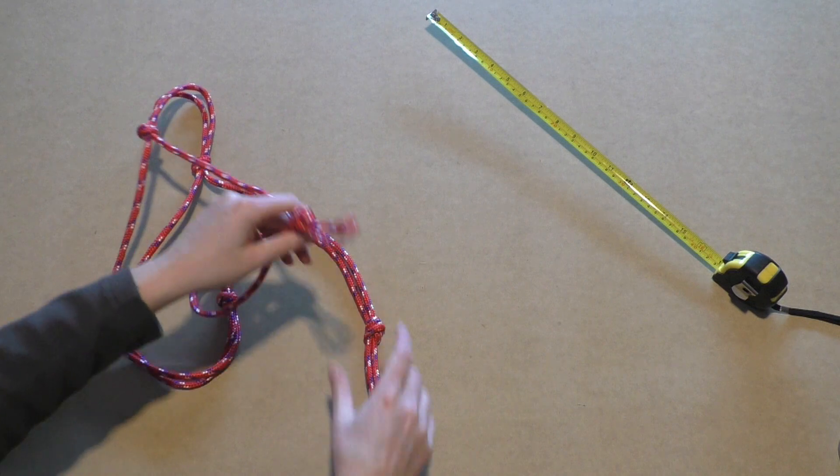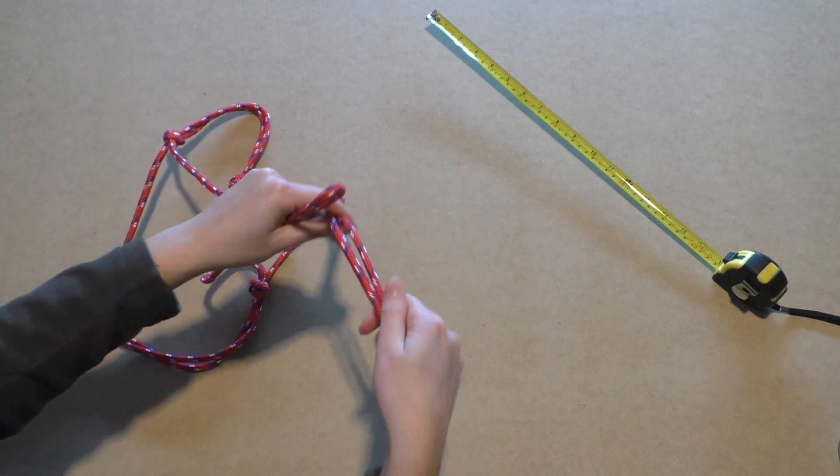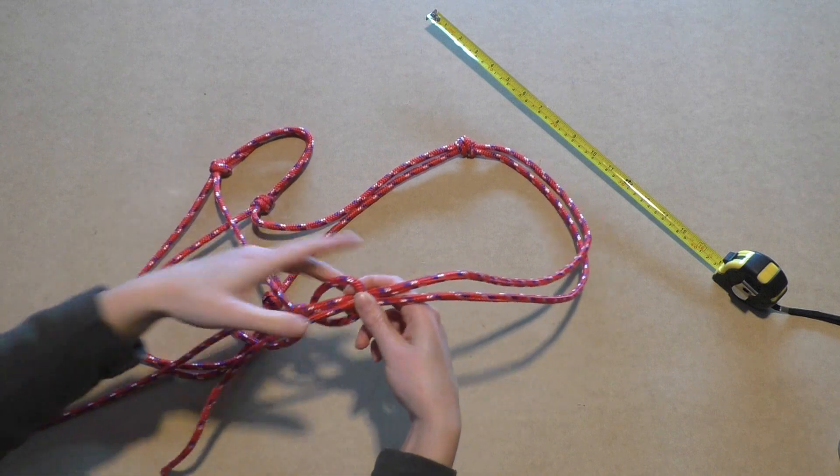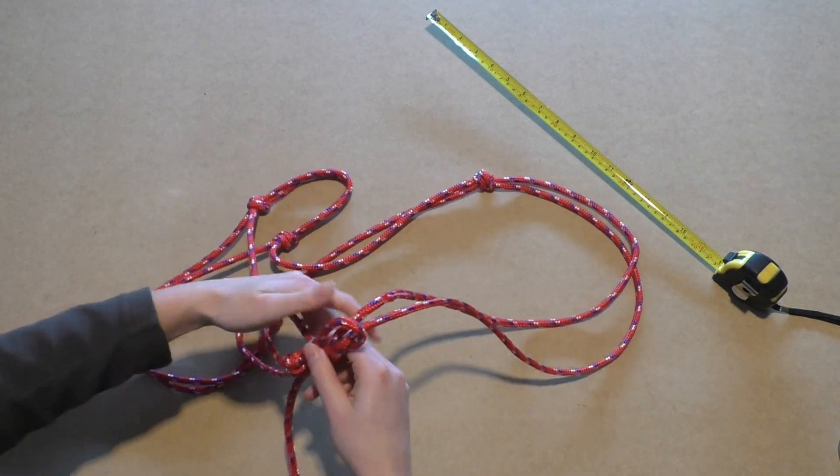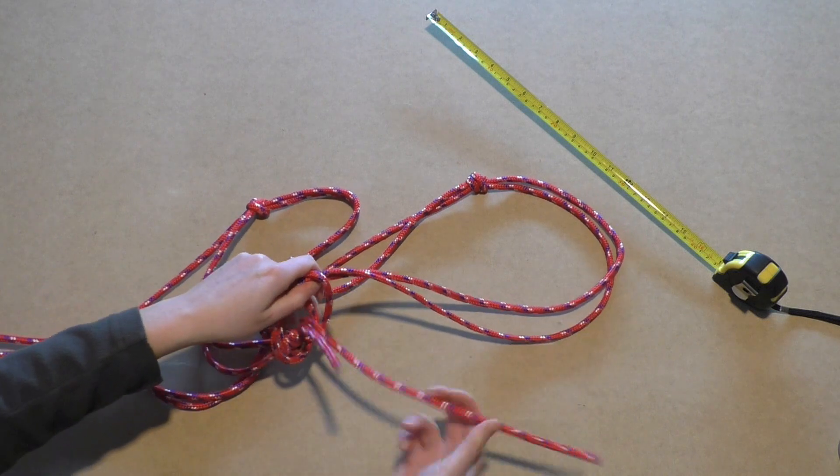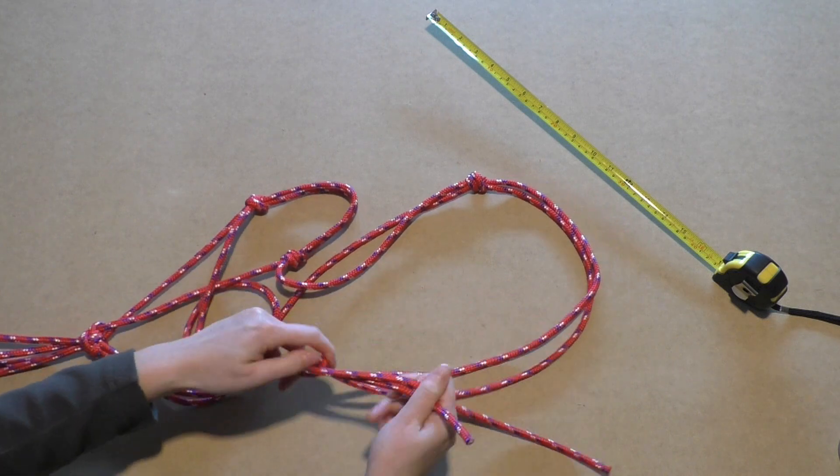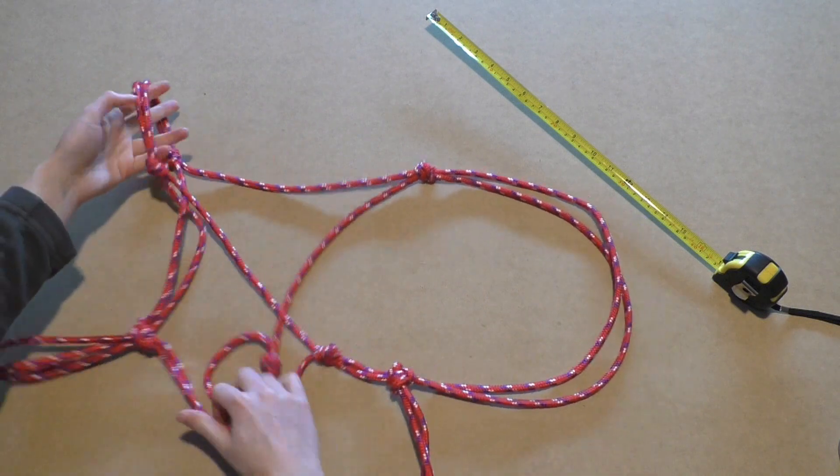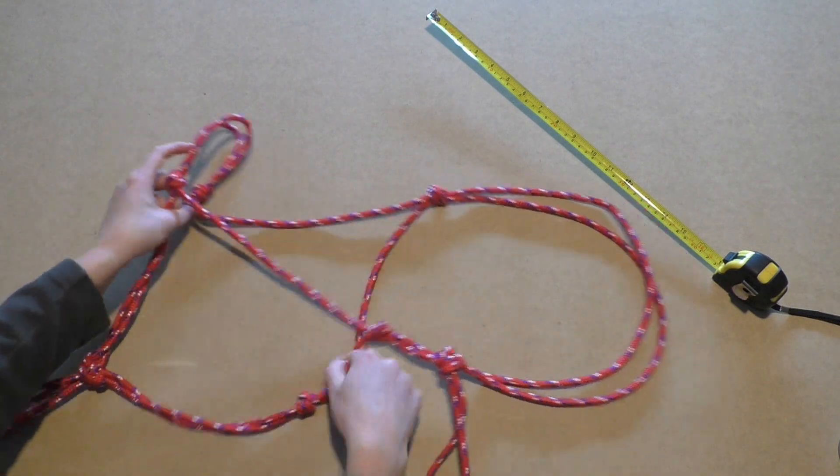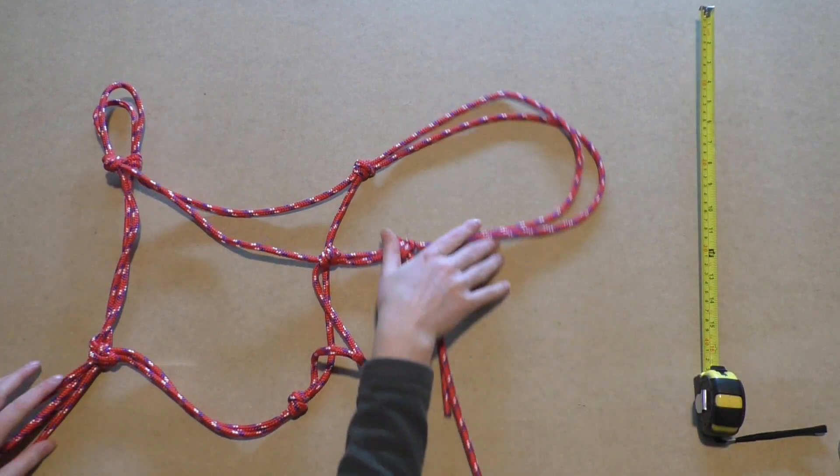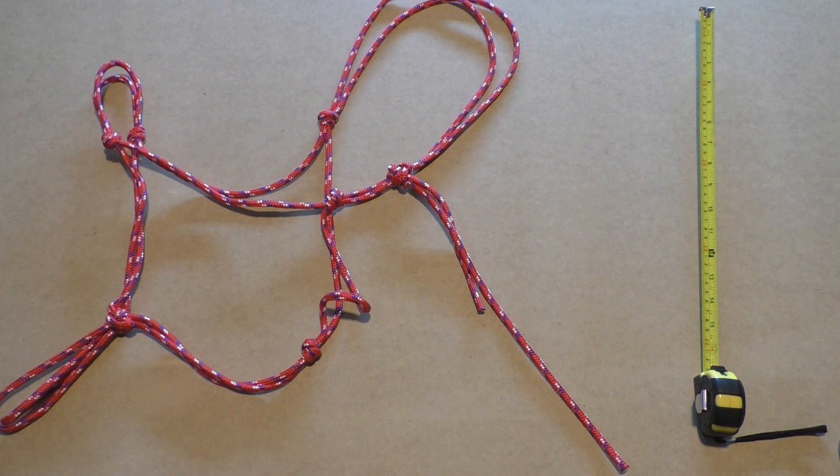The long, loose ends that are left now will form the rope that goes behind the ears of the horse. Feed it through the overhand loop to close the halter. To finish up, cut off the loose ends at the same length and burn the ends so they won't get loose. And then you're done!